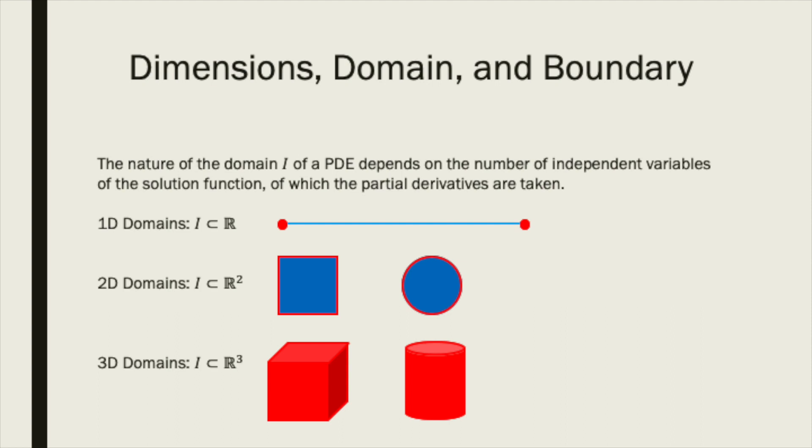It is mathematically possible to have PDEs with four or more independent variables. However, for obvious reasons, it becomes difficult to visualize the domains and their boundaries geometrically.